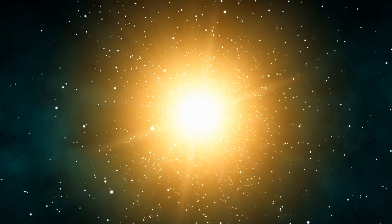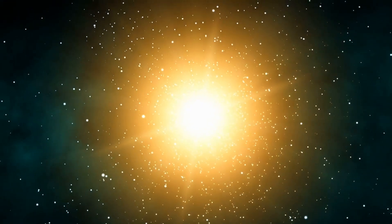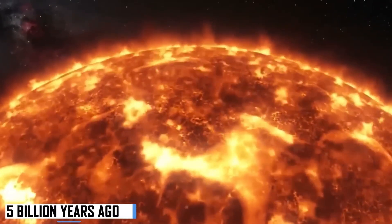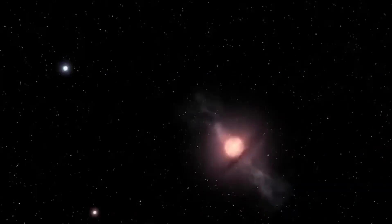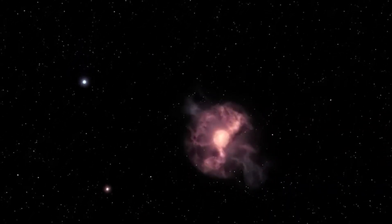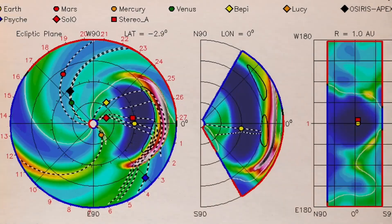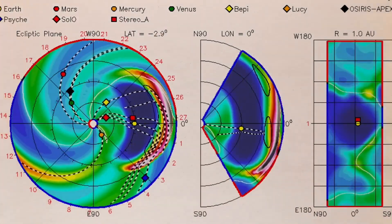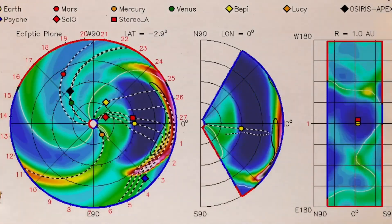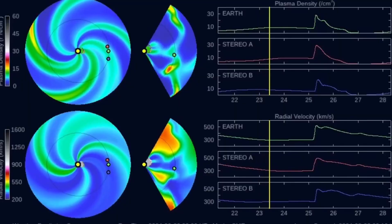Before we get ahead of ourselves, let's calm our nerves with a little humor. An exploding star does not mean that we are witnessing the end of the world. It would have been catastrophic if Betelgeuse were just 30 light years away, but the enormous distance separating Betelgeuse from earth makes the explosion harmless to us. But this doesn't mean that Betelgeuse's supernova would come and go without leaving its mark on earth.